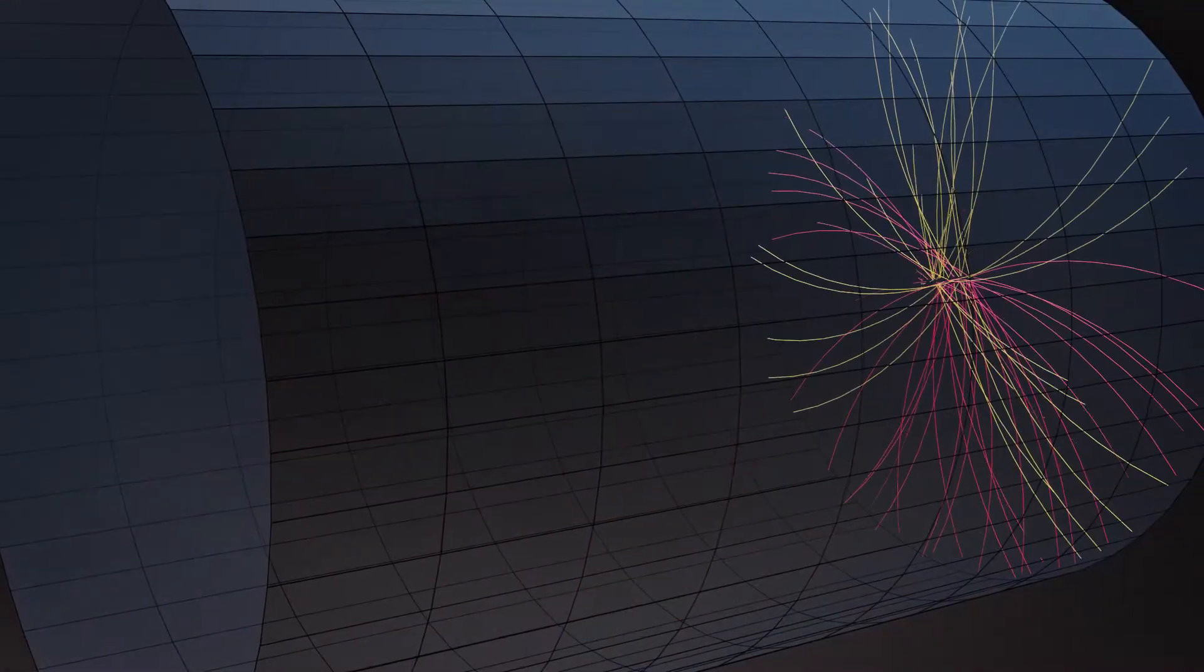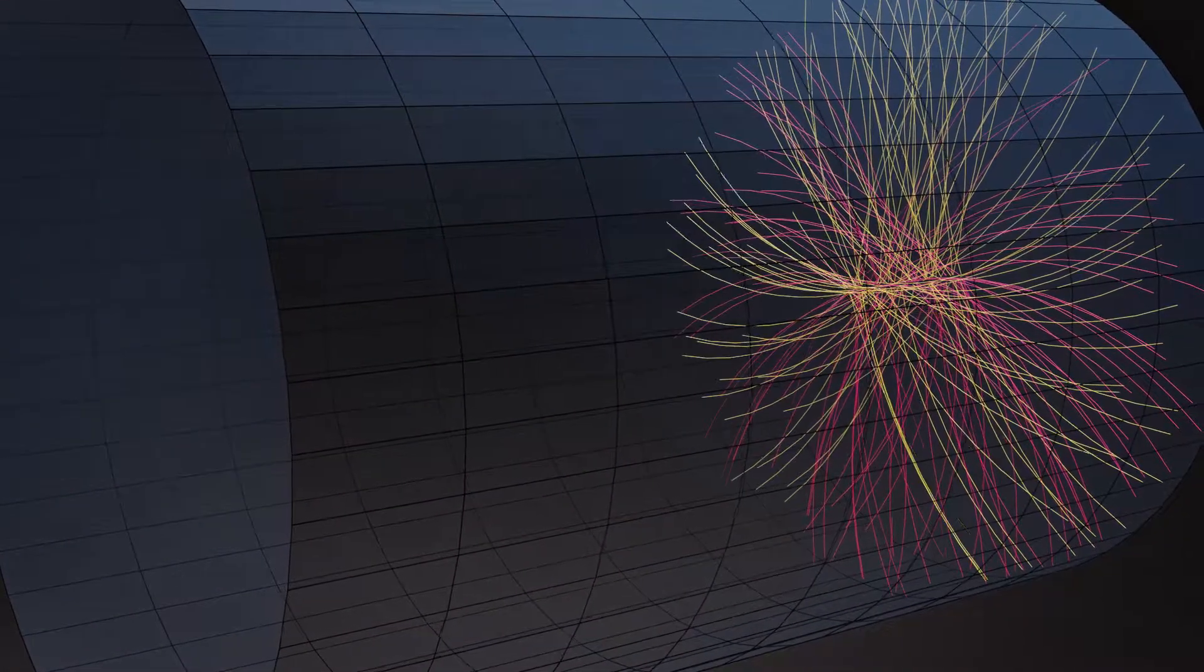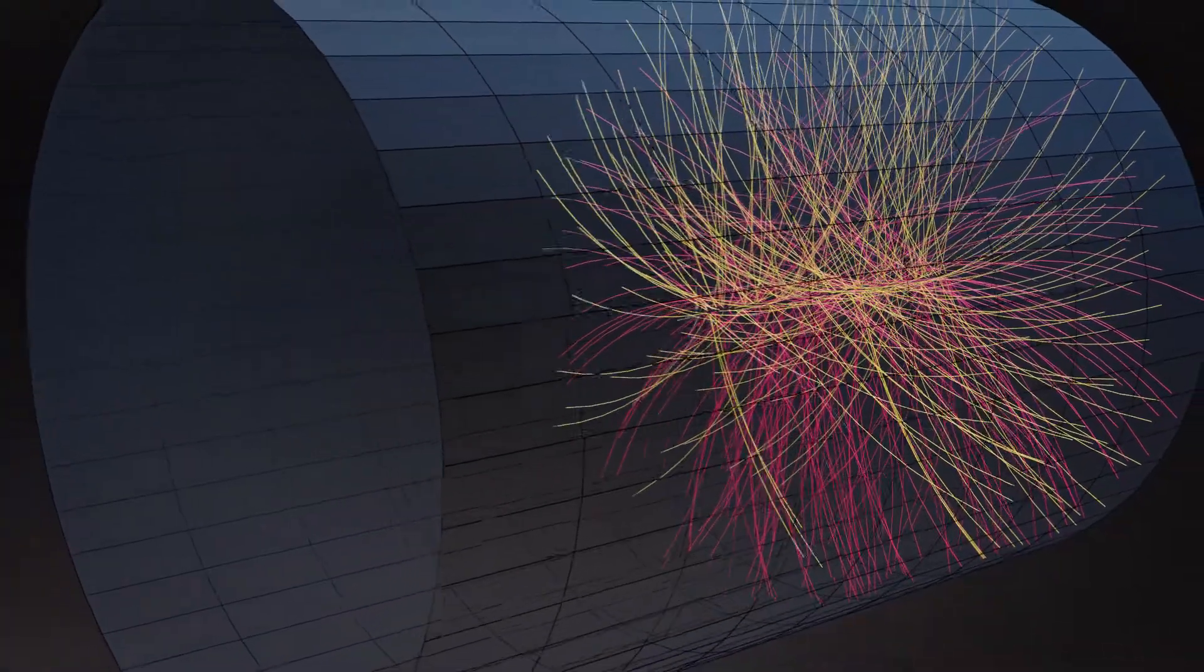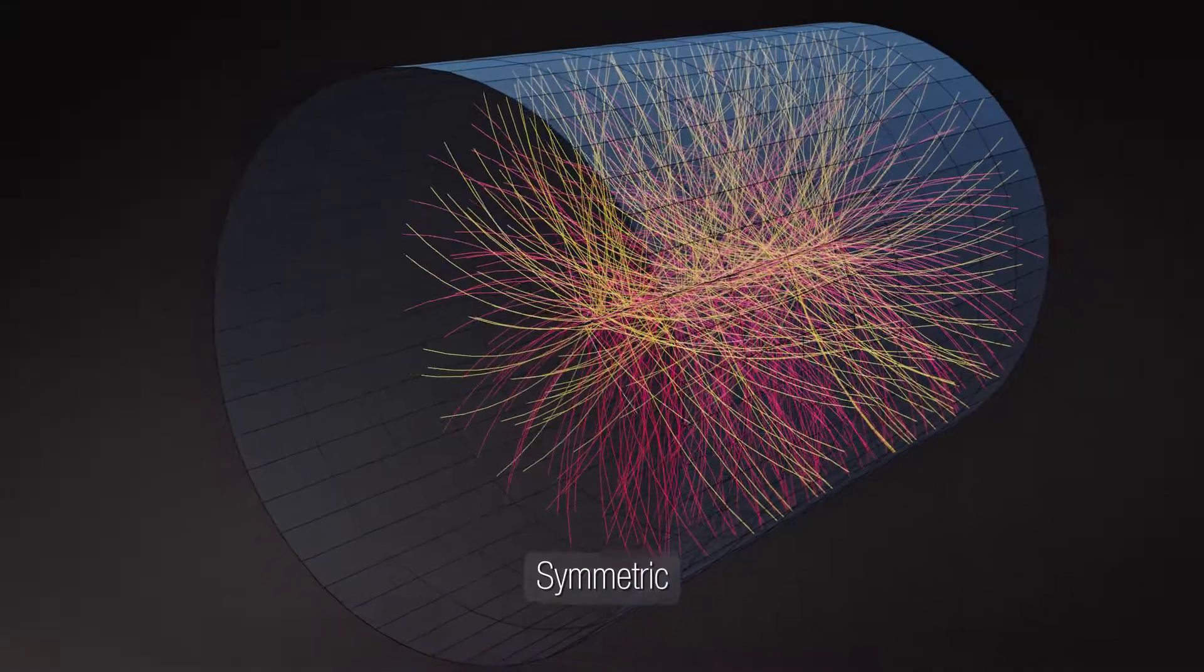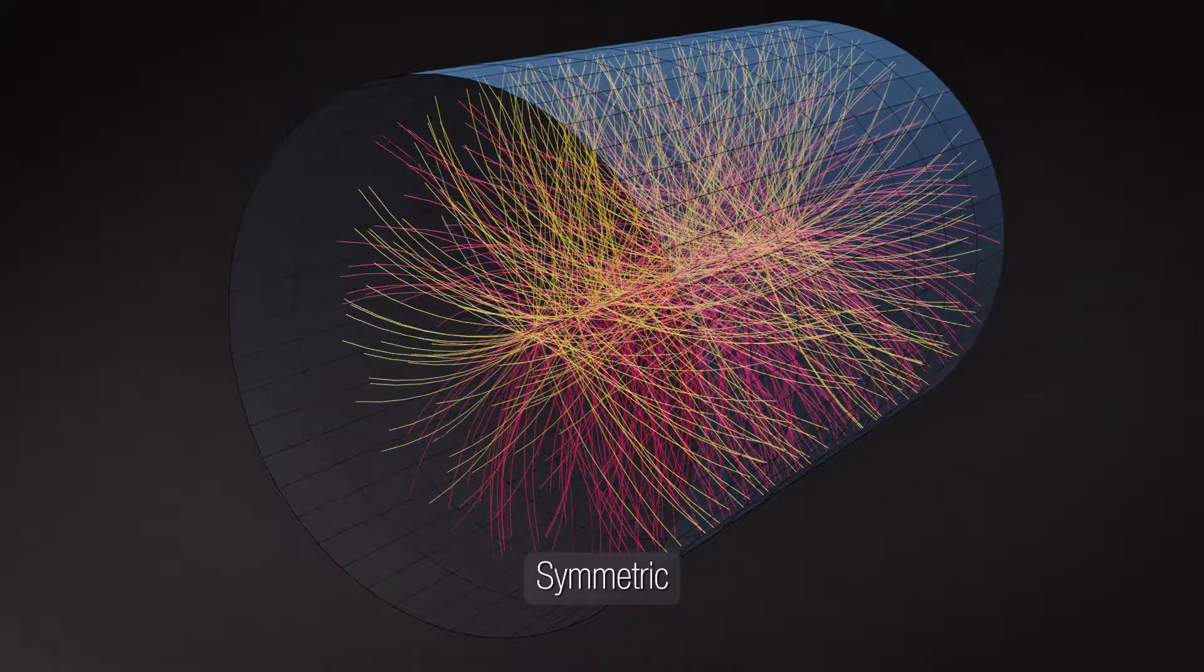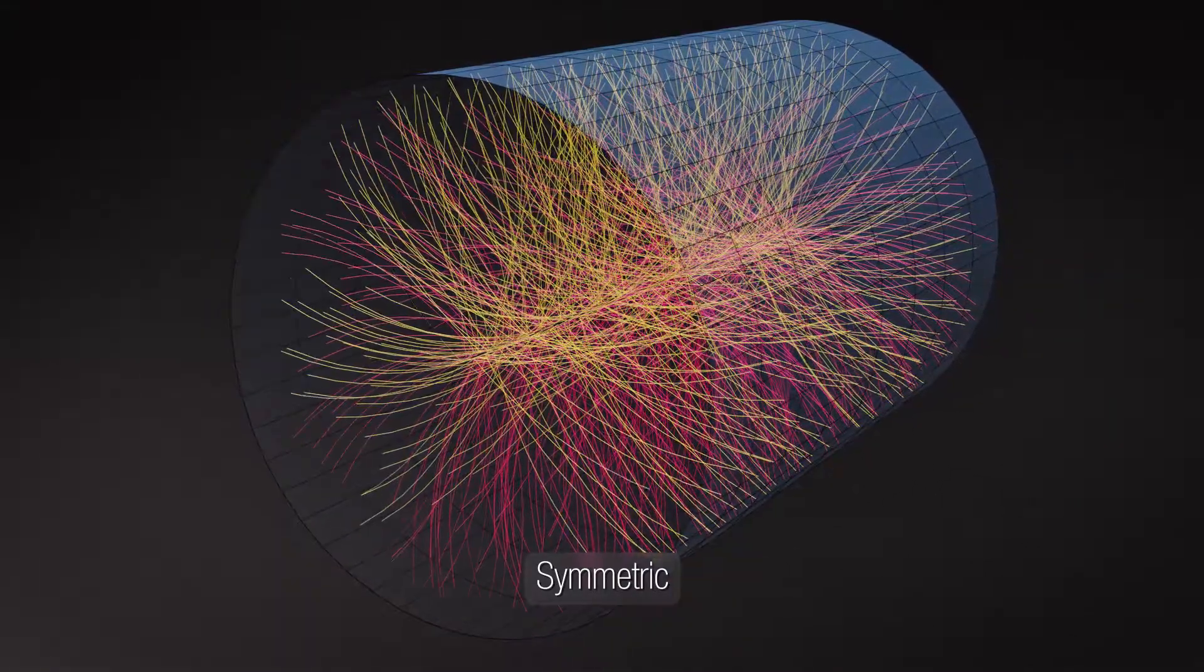When experiments like LHC at CERN measure the production of antimatter in particle collisions, it turns out that the production is quasi-symmetric. The same number of particles and antiparticles is almost always produced.